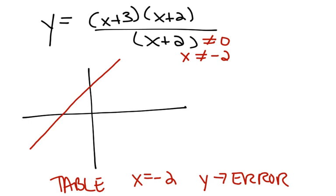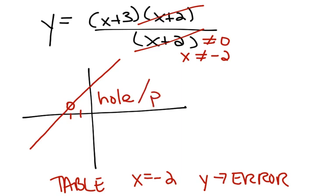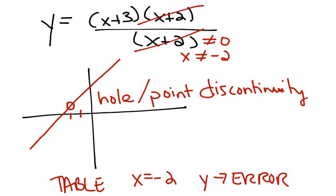The reason the graph looks like a straight line is because there's a common factor in the numerator and denominator that can be cancelled. So really the graph is just y equals x plus 3. However, at x equals negative 2, if you graph this by hand, you would put a little circle — called a hole — at that point. It's also called a point discontinuity because it's a point where the graph does not exist. You'd have to bring your pencil there, pick it up, and start again on the other side.